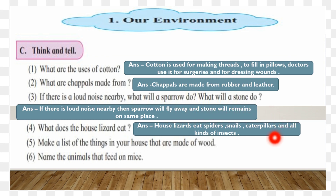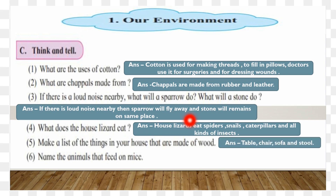Next question: Make a list of the things in your house that are made of wood. Answer: table, chair, sofa, and stool are made from wood.